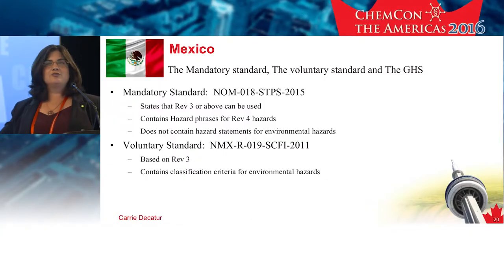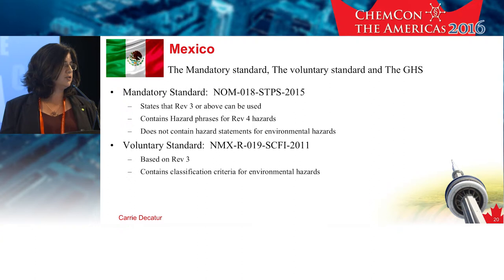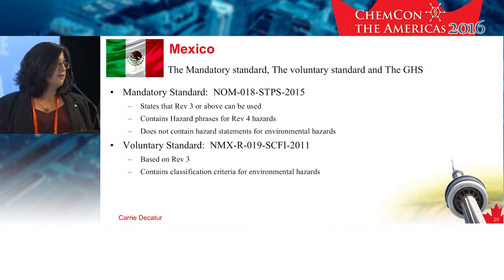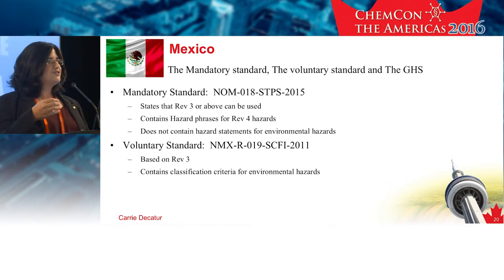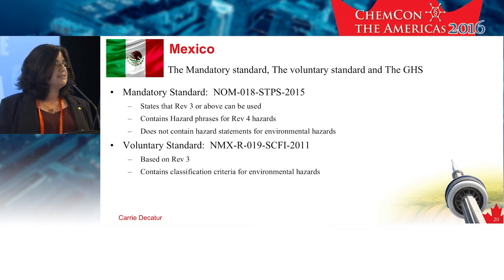For Mexico, we have the mandatory standard, the voluntary standard, and the GHS — or the UN GHS. As we learned on Tuesday, the mandatory standard is the NOM, and you can use Revision 3 or above. Within the document itself, it has tables with codes for the HMP phrases, which gives an indication of the building blocks they accepted — and those building blocks do match up with Revision 4. The document did not contain hazard statements for environmental hazards, which is interesting because the NMX standard did include environmental hazards. I would still expect them to be used because the NMX is referenced in the NOM, but it's an interpretation.